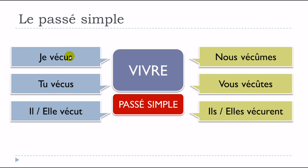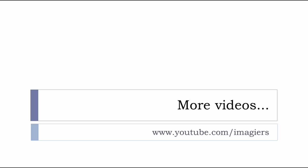One more time: je vécus — final S not pronounced. Tu vécus — same. Il vécut, elle vécut — final T not pronounced. So basically you have only one form, vécu, for these three persons. Nous vécûmes — final S not pronounced. Vous vécûtes — same. Ils vécurent, elles vécurent — ENT for the plural not pronounced. So: je vécus, tu vécus, il vécut, elle vécut, nous vécûmes, vous vécûtes, ils vécurent, elles vécurent. Voilà, have a great day, au revoir et à bientôt.